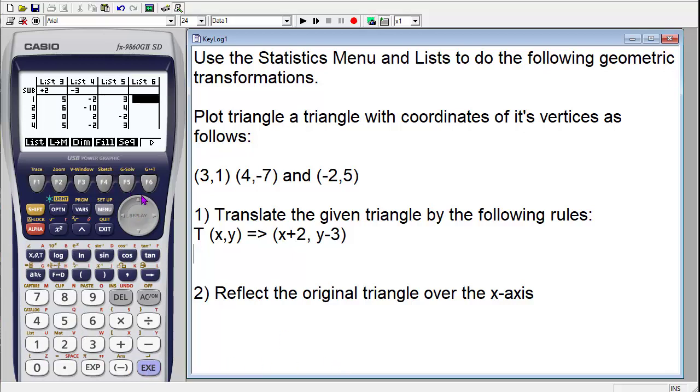But what happens to my y-coordinates? Well, my y-coordinates reflect over the x, so they become their inverse, their negative. So list 6, which is my new y, is going to be the negative of list 2.